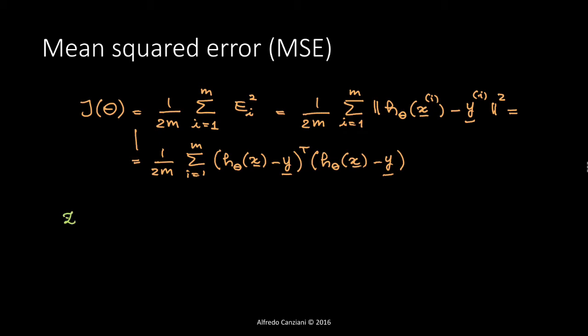The last weighted summation z is also called the logits of the network, and each component is called a logit.